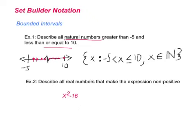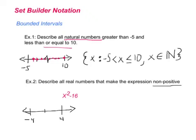Next, describe all real numbers that make this expression non-positive. Be careful — non-positive means negative or zero. Let's start with zero: what makes this expression zero? It's zero when x² equals 16, so x has to be 4 or negative 4. So on our graph, both 4 and negative 4 make the expression zero. For negative values — non-positive — the expression x² - 16 will be negative when x² is less than 16, for example plugging in 1 gives 1 - 16 = -15, so 1 works.